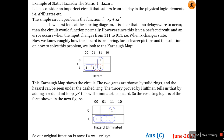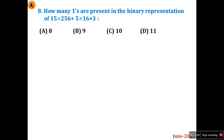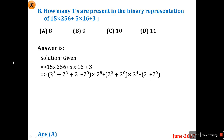Question eight: how many ones are present in the binary representation of 15×256 + 5×16 + 3? Instead of computing the full decimal value and converting, use powers of 2. Note that 256 = 2^8, and 15 = 2^3 + 2^2 + 2^1 + 2^0, so 15×256 expands to 2^11 + 2^10 + 2^9 + 2^8.